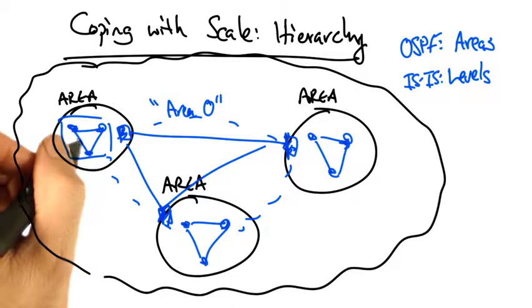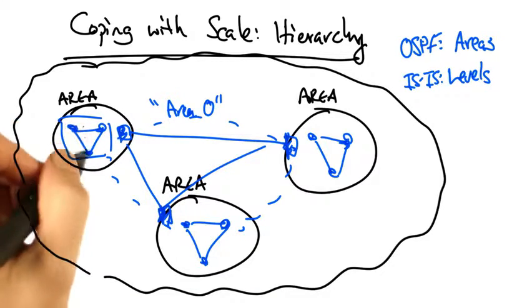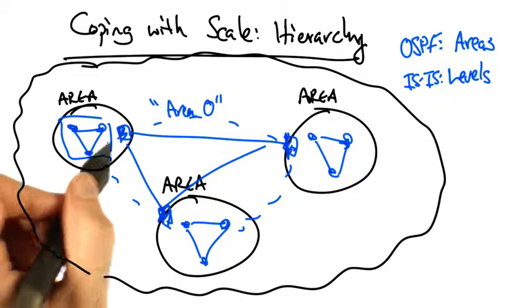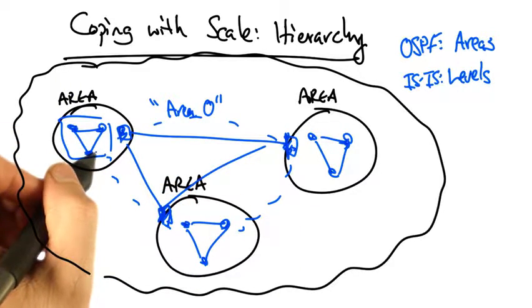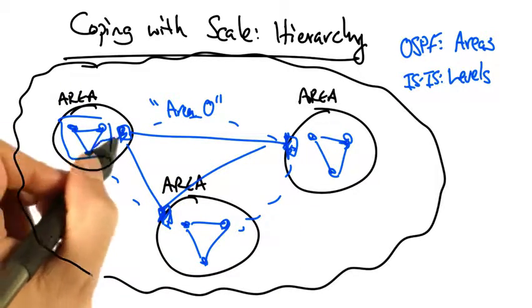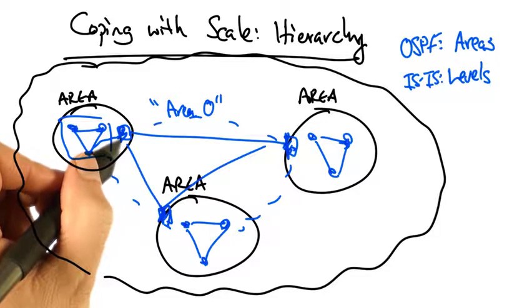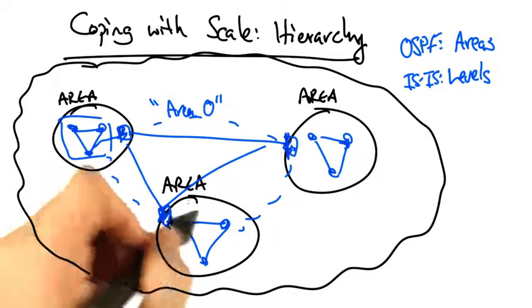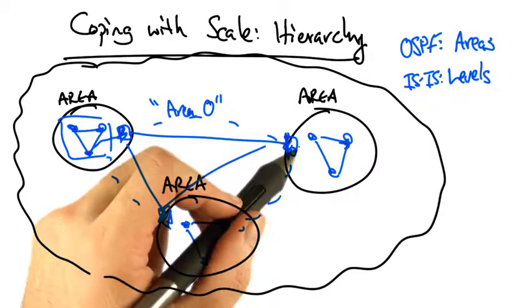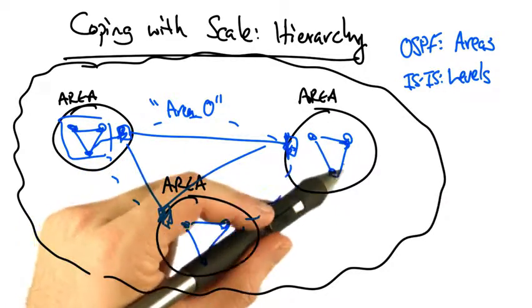Now, paths are computed by computing the shortest path within an area, or if the path must leave an area, by stitching together the shortest path to the area 0 backbone router, then the shortest path across area 0, followed by another intra-area shortest path.